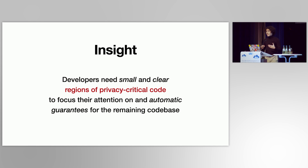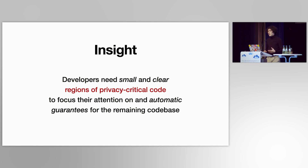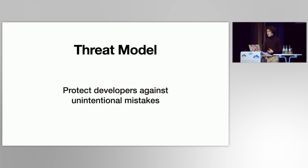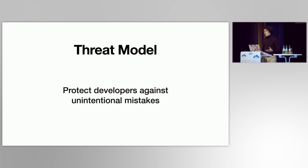The main insight of this work is that developers need small and clear regions of privacy-critical code on which they can focus their attention and then get automatic guarantees for the rest of the codebase. The threat model we employ is honest developers who try their best, so malicious actions are out of scope.